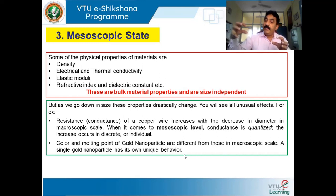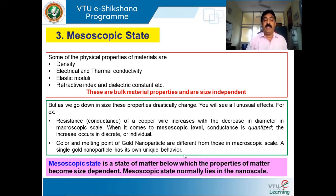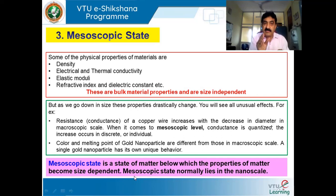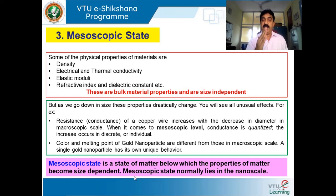In the macroscopic range, one type of property; in the nano range, another type of property. For copper: in the macro range, resistance changes continuously; in the nano range, resistance changes in a discrete manner. The mesoscopic state is defined as a state of matter below which the properties of matter become size dependent. Above the mesoscopic state, properties are not size dependent; below it, they are. At sizes like 10 to the power 0, minus 2, minus 3, and minus 6, the property remains the same. But at 10 to the power minus 9 and below, the property changes drastically for every size.